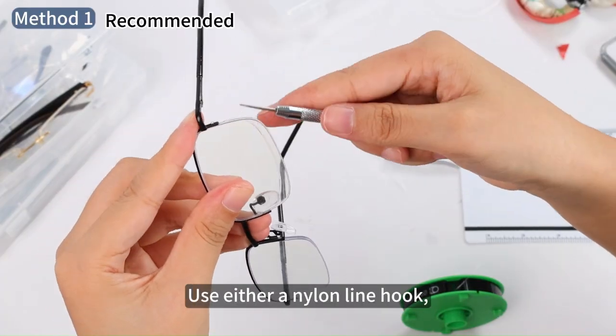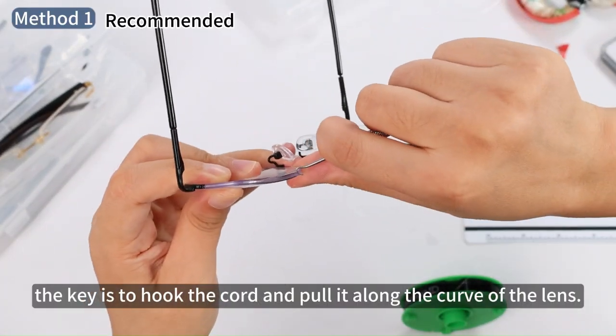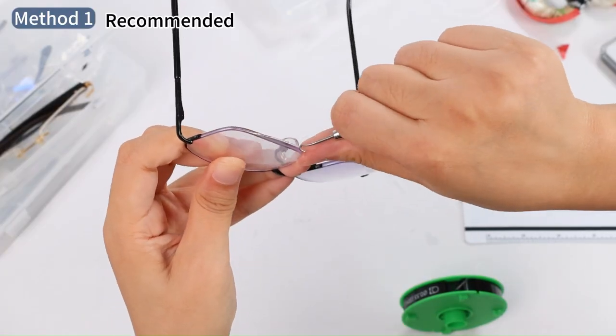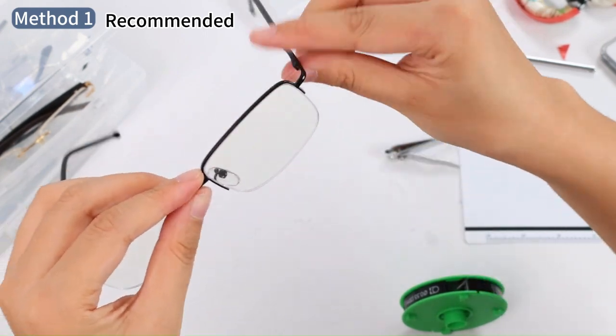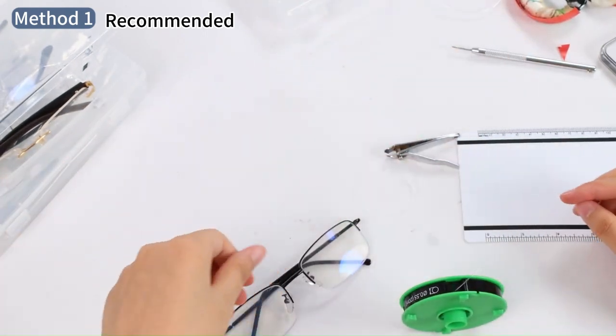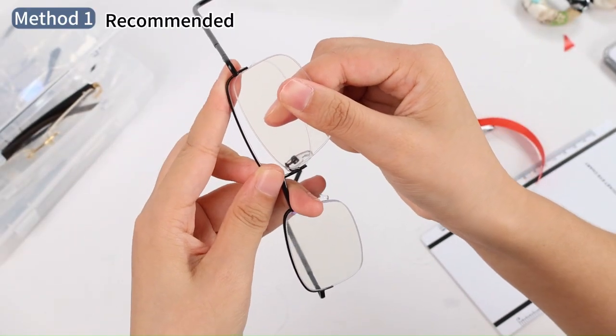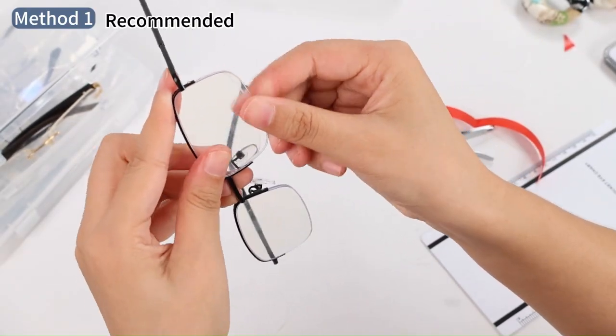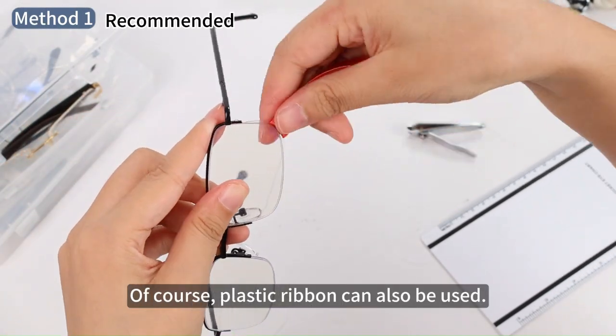Use either a nylon line hook. The key is to hook the cord and pull it along the curve of the lens. Of course, a plastic ribbon can also be used.